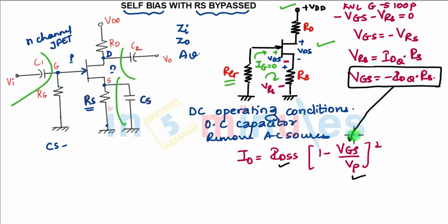So when I substitute this VGS over here, RS will be given in the question, so I have only one unknown that is IDQ. So I can find the value of IDQ. If you know the value of IDQ, you can find the value of GM, which is GMO times one minus VGS by VP.